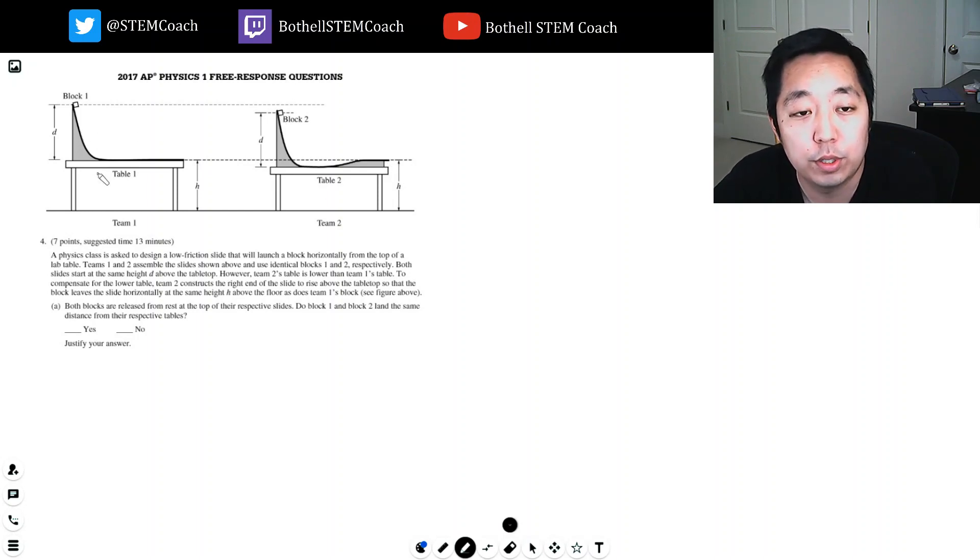When there's no friction, no energy loss, you use conservation of energy. All of this height, this potential energy here gets converted to kinetic energy, but block two is only D minus H above where they finish. So he has less potential energy than this guy. So this guy's going to come out with a lower velocity, like less potential energy is getting converted.